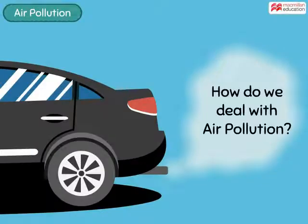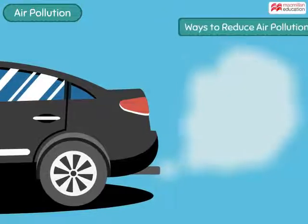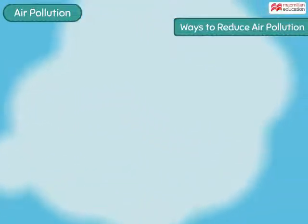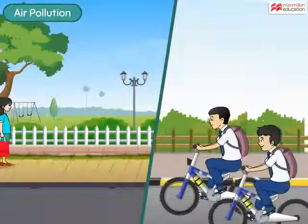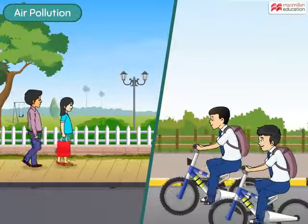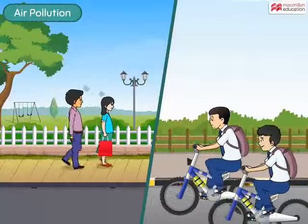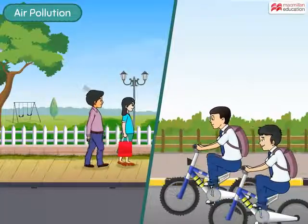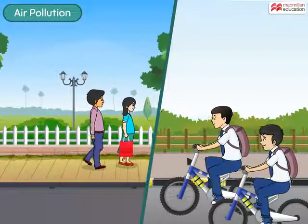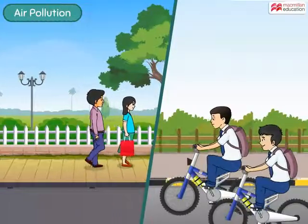So how do we deal with air pollution, which we know is so dangerous? There are several ways by which we can reduce air pollution. For a start, we can walk or use a bicycle to travel to nearby places, which will help reduce the use of motor vehicles that cause pollution.